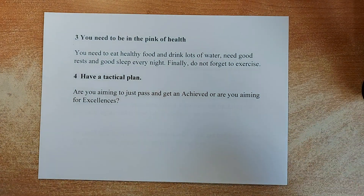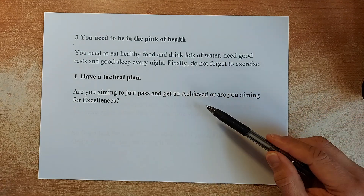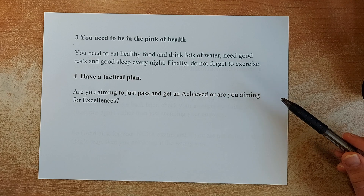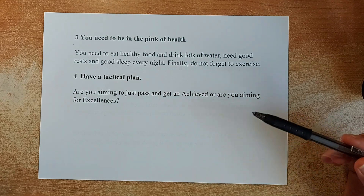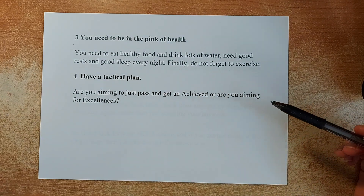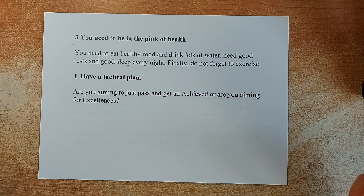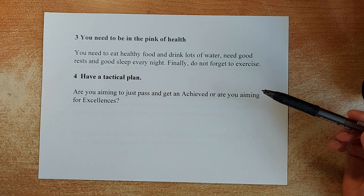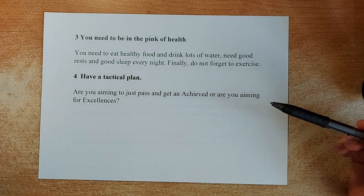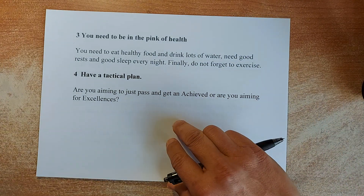Tip number 4: You need to have a tactical plan. Before your exam, know what you are aiming for — are you aiming for Achieved or Excellence? For those aiming for Achieved, target the A and B questions, or questions 1, 2, and 3, and you need to get 5 out of 6 to achieve. For those aiming for Excellence, consider whether to do all questions or focus on the C, D, and E questions. Remember: if you get Excellence on a question, the Achieved and Merit marks will not be counted. So have a tactical plan on what you need to do.